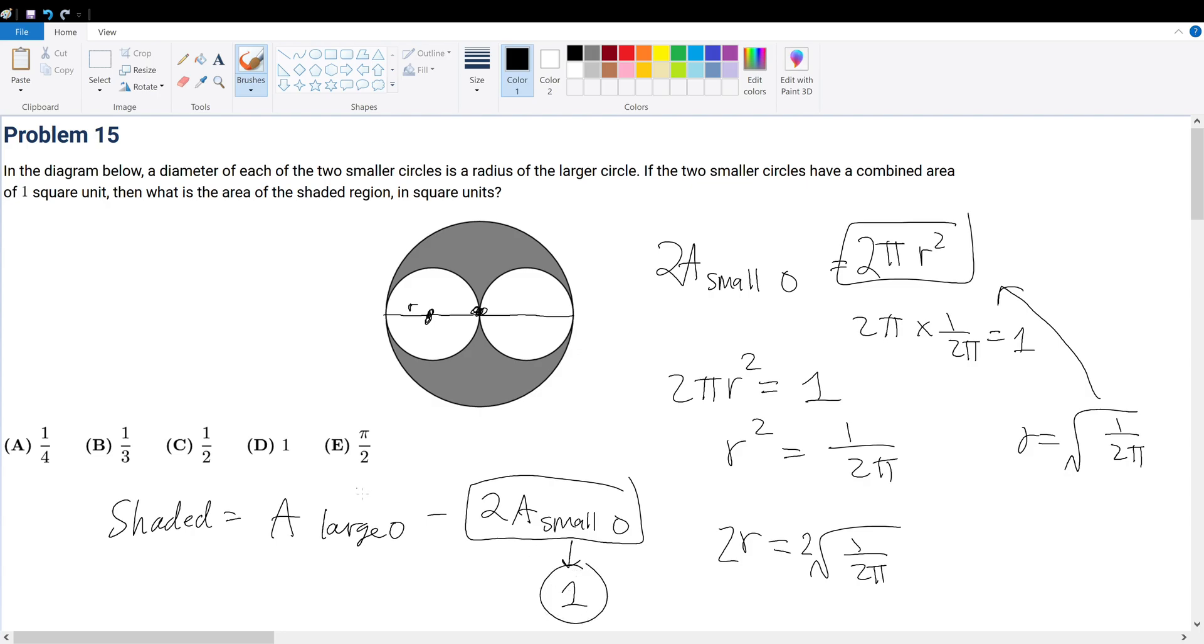But then what is the area of the large circle? Well, the area of the large circle is equal to πr² as well. But in relation to the radius of the smaller circle, that is two. That is supposed to be π times (2r)².